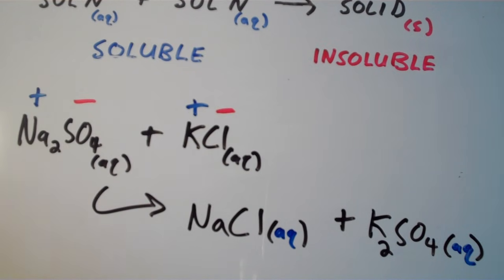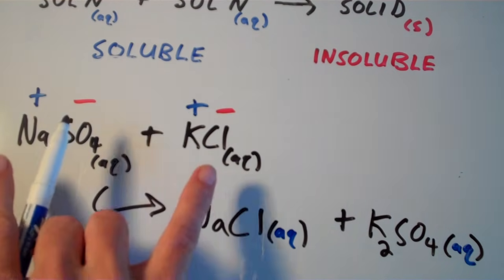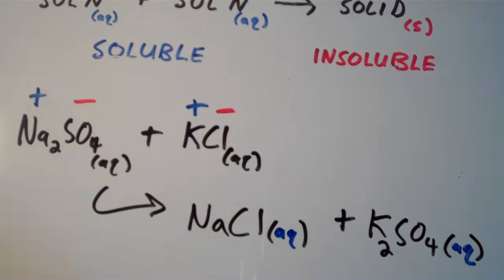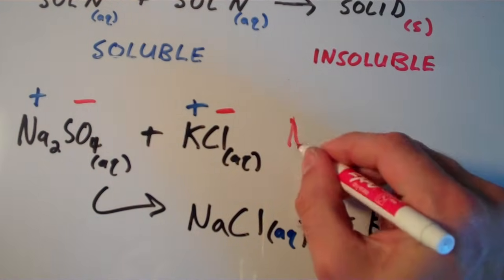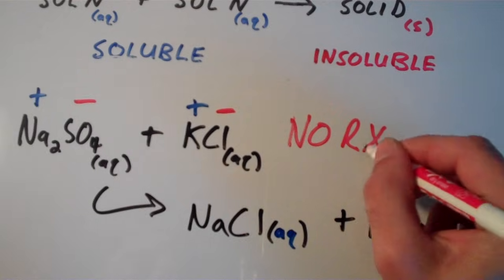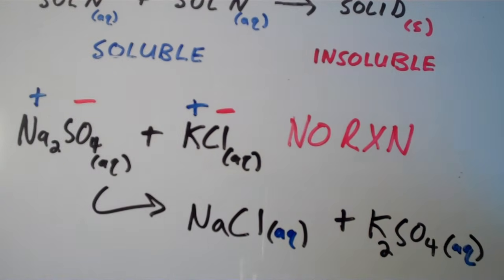Notice that we have two aqueous reactants and two aqueous products. This is not a precipitation reaction. If both of your products are aqueous and neither is solid, we say there is no reaction — we did not get a precipitate out of the solution. That's a basic lesson on precipitation reactions.